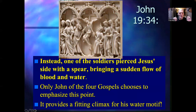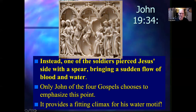This motif comes to a climax in John 19:34, where John is emphatically prophetic. The beloved disciple saw this with his own eyes: one of the soldiers pierced Jesus' side with a spear, bringing the sudden flow of blood and water. Scholars have pointed out that when the pericardial sac around the heart is pierced, blood and something like water can flow out. But only John among the four gospels chooses to emphasize this point — it provides a fitting climax for this water motif.